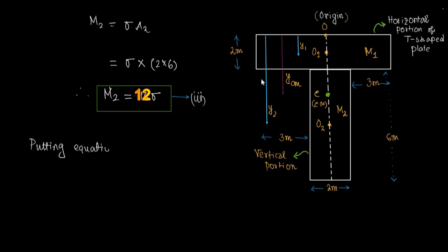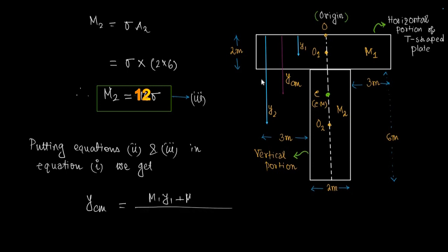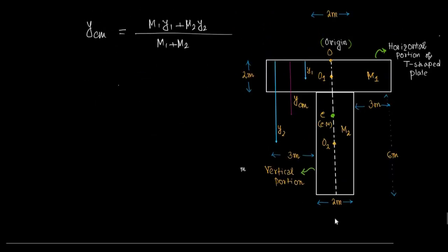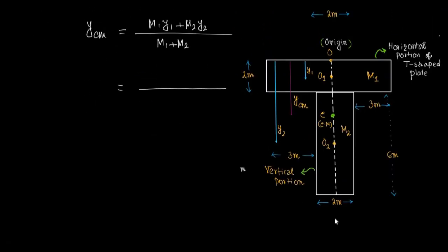Substituting the values of M1 and M2 into the equation, ycm equals (M1·y1 + M2·y2) / (M1 + M2), which gives ycm equals (16σ × 1 + 12σ × 5) divided by (16σ + 12σ).